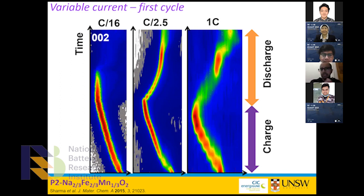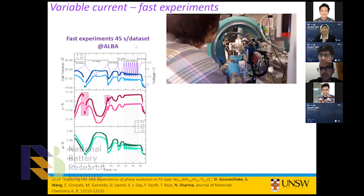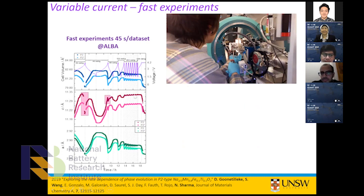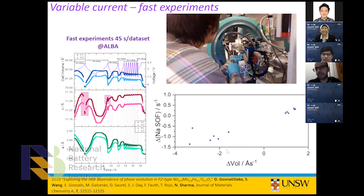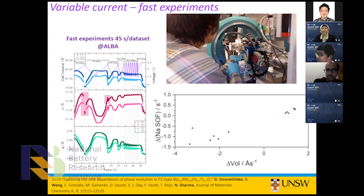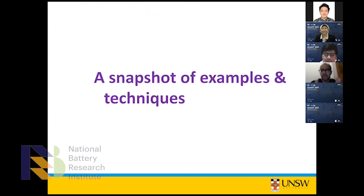Here's an example of a very fast experiment getting data at 45 seconds per dataset — around 4,000 datasets as we charge and discharge at increasing current rates. As the current rate increases, the structure changes less because we're getting a smaller capacity. We fit the cell volume and sodium concentration with trend lines and extract kinetic parameters: volume change versus sodium content, and the rate of change of volume as a function of rate of change of sodium. It's very powerful work.